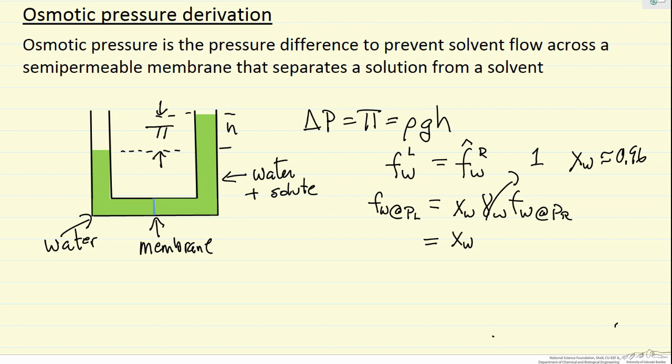Fugacity of water at this higher pressure is going to be the fugacity of water at the pressure on the left side, and then a correction. That's the Poynting correction, which is an exponential: the volume of water times the pressure difference (pressure on the right side minus pressure on the left side) divided by RT (gas constant times absolute temperature).